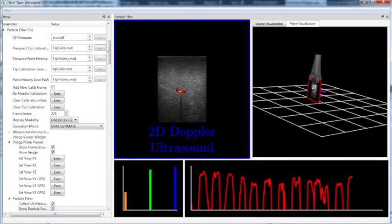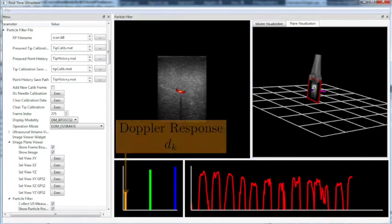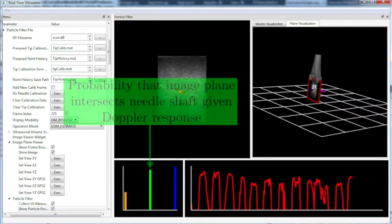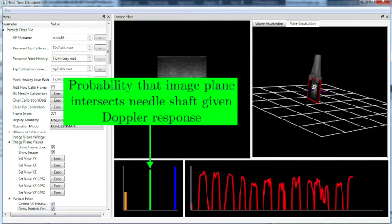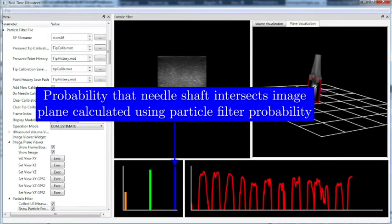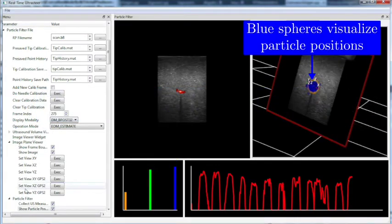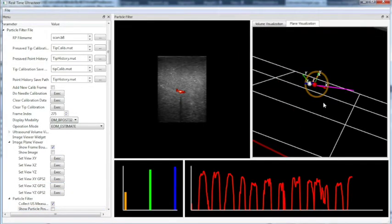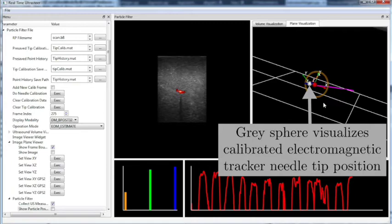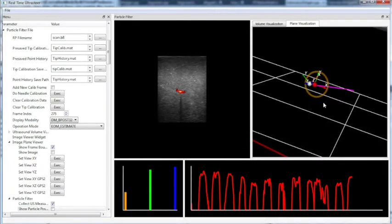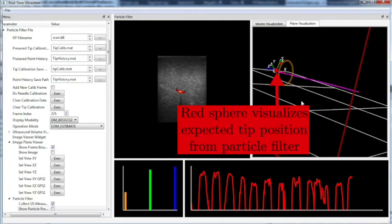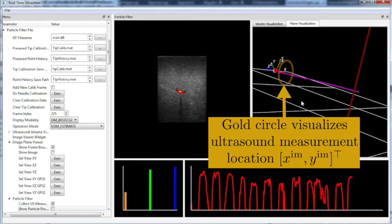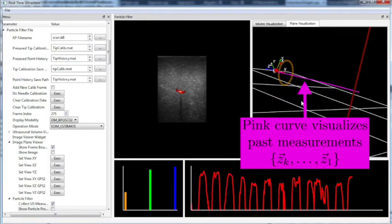2D Doppler ultrasound is displayed in the upper left pane. Three metrics are displayed in the lower left pane: Doppler response in orange, probability that the image plane intersects the needle given the Doppler response in green, and probability that the image plane intersects the shaft given the particle filter estimate in blue. In the upper right pane, blue spheres visualize the particles. The gray sphere visualizes the gold standard tip position given by the electromagnetic tracker, while the red sphere visualizes the estimated tip position given by the particle filter. The gold circle in the image plane indicates the current image measurement, and the pink curve visualizes past measurements.